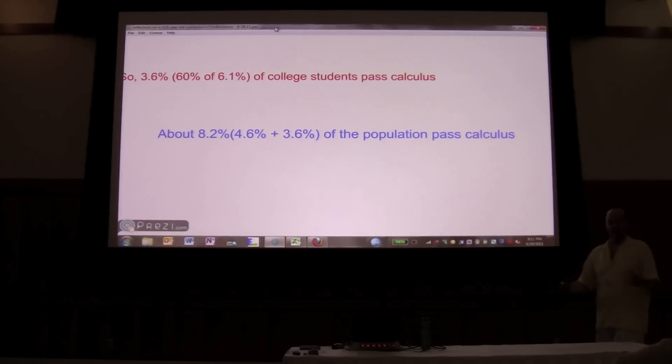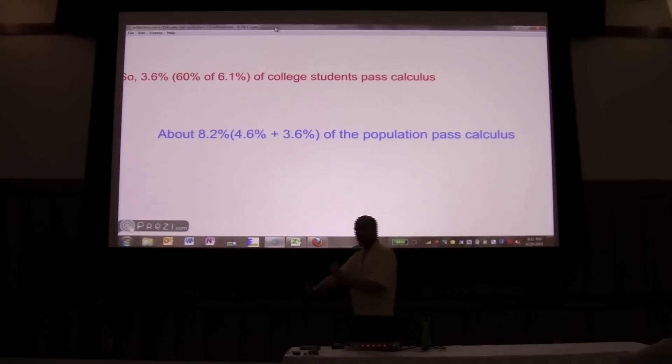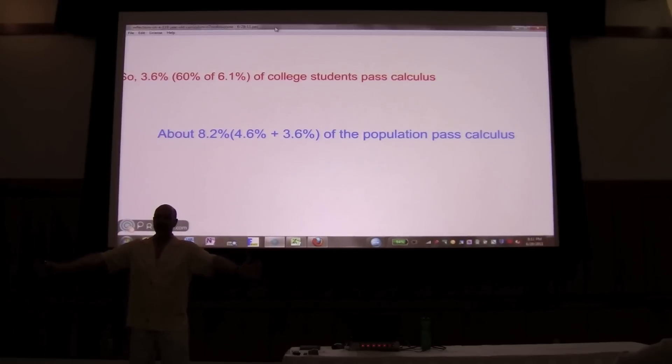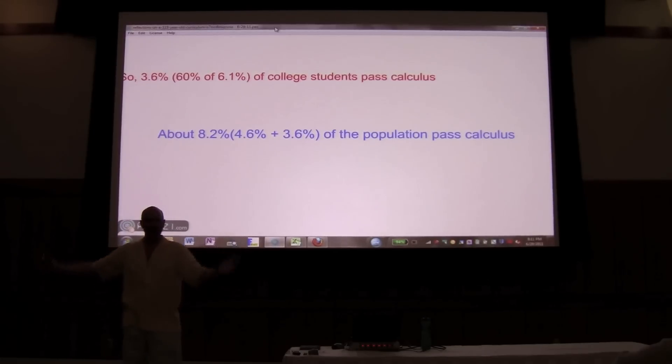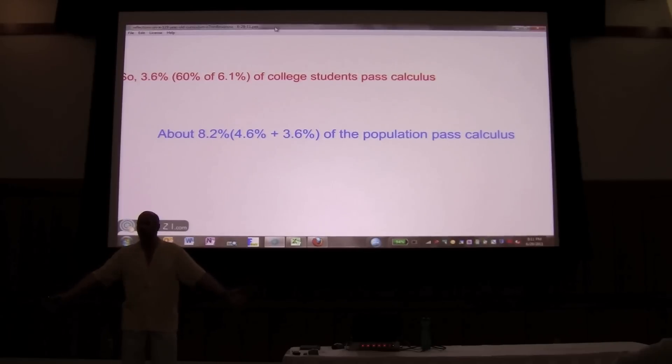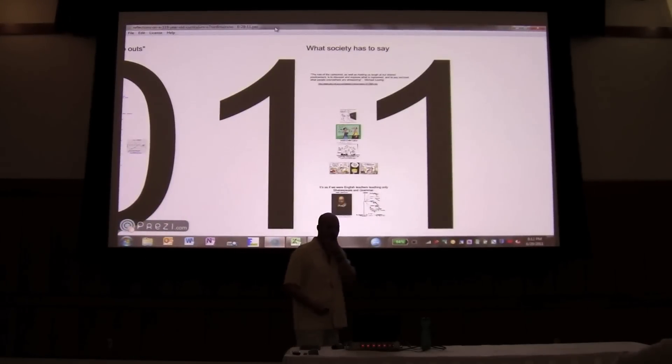8.2% of the population passes calculus. Our curriculum is designed to prepare kids for calculus, and 8.2% of the population at some time in their life passes calculus. Now some of you are saying, Niels, your numbers are off. I saw that one number, and I'm not so sure about that, right? Double it. That's fine. Triple it. It's okay with me. If you triple it, and I'm off by that much, and I really don't think I am, then only 25% of the population would pass calculus, and in any kind of grading system, that's failing.